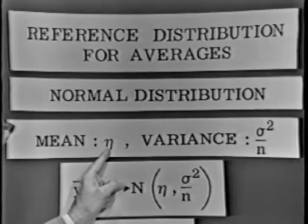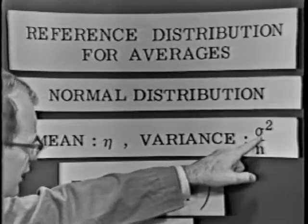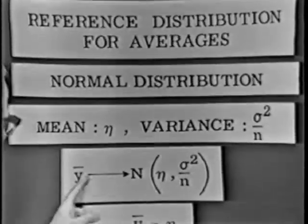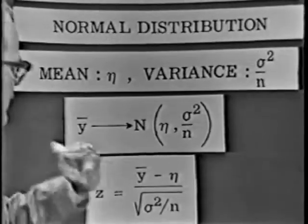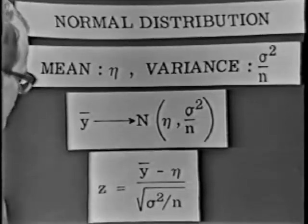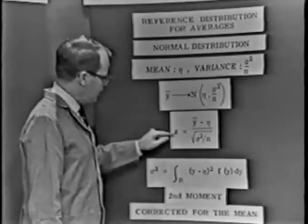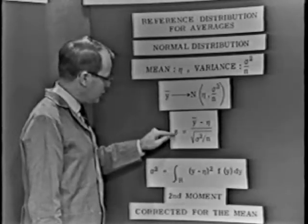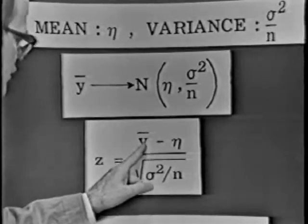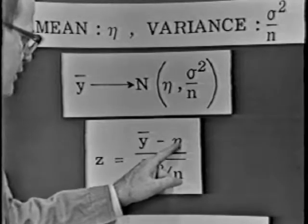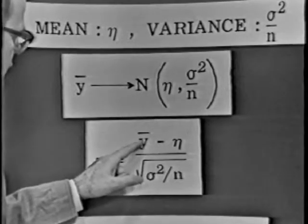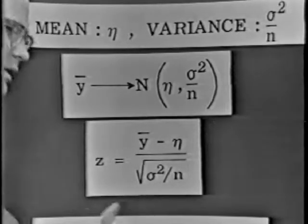That's the mean of the distribution of the observations. Sigma squared is the variance of the observations, and n is the number of observations going into the average. We say the averages tend to have a normal distribution with mean eta and variance sigma squared over n. And once we pick up that normal distribution due to the central limit theorem, we then come back and we're ready to talk in terms of the normal deviate. The normal deviate can be obtained by taking the average minus the mean — the parameter the statistic estimates — and dividing it by the square root of the variance of that statistic. The variance of an average is sigma squared over n.